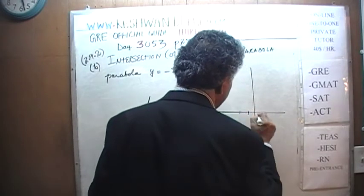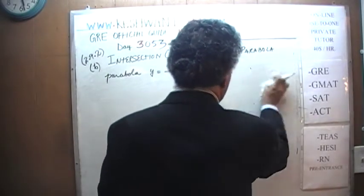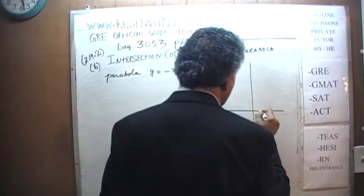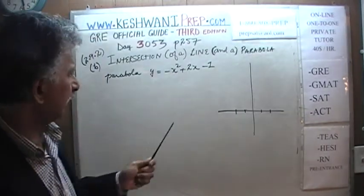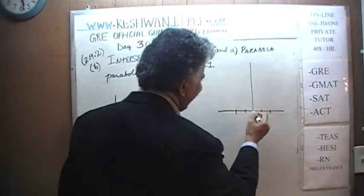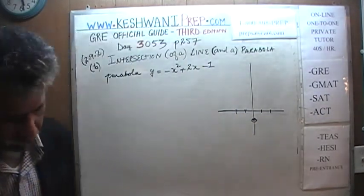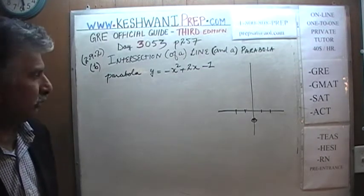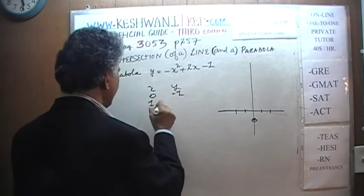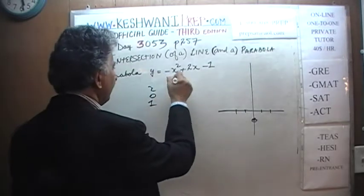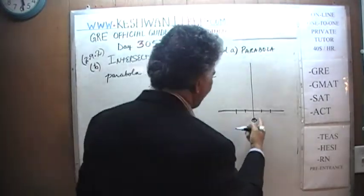We are going to use x values: 0, positive 1, negative 1, negative 2, and positive 2. When x is 0, y is negative 1. When x is 1, we get negative 1, positive 2, and negative 1 — they cancel to give y equals 0. When x is 2, we get negative 4, positive 4, and negative 1 — they cancel to give y equals negative 1.